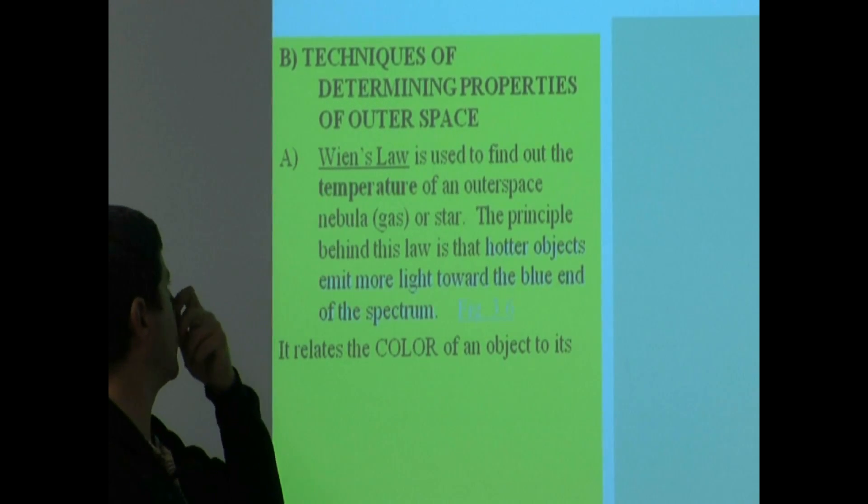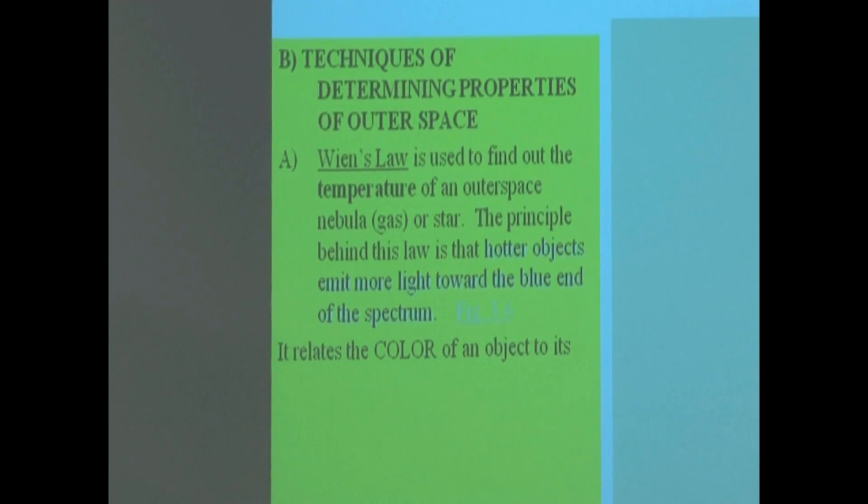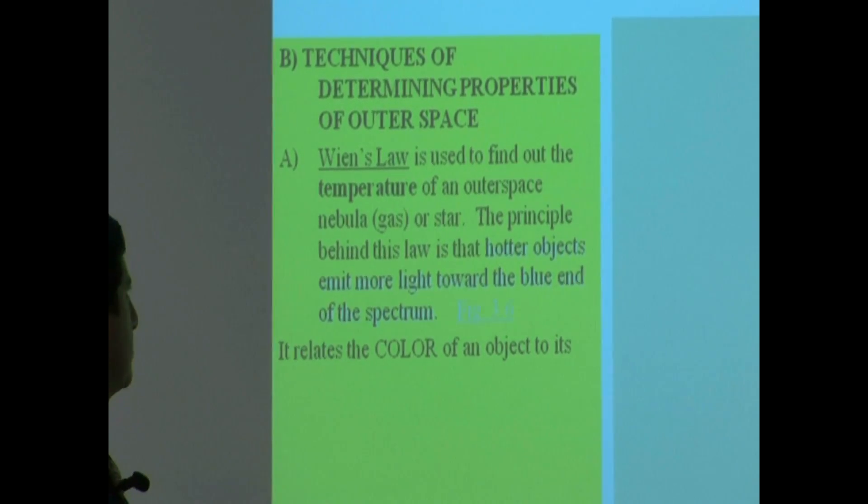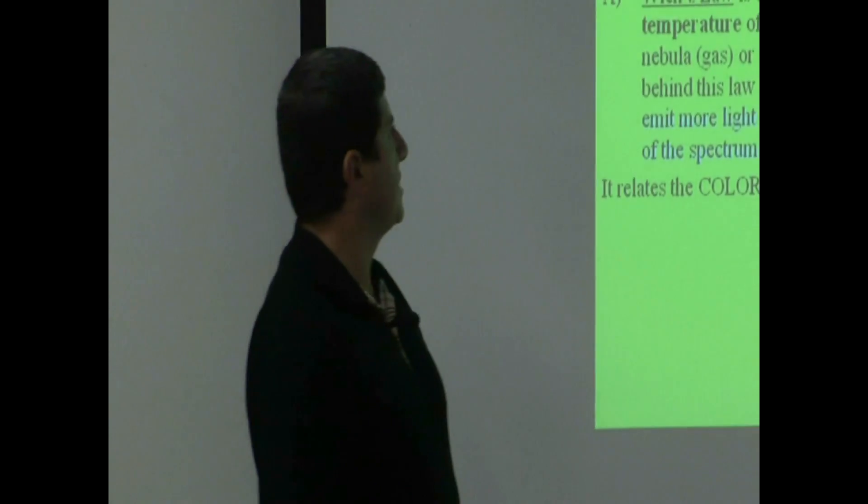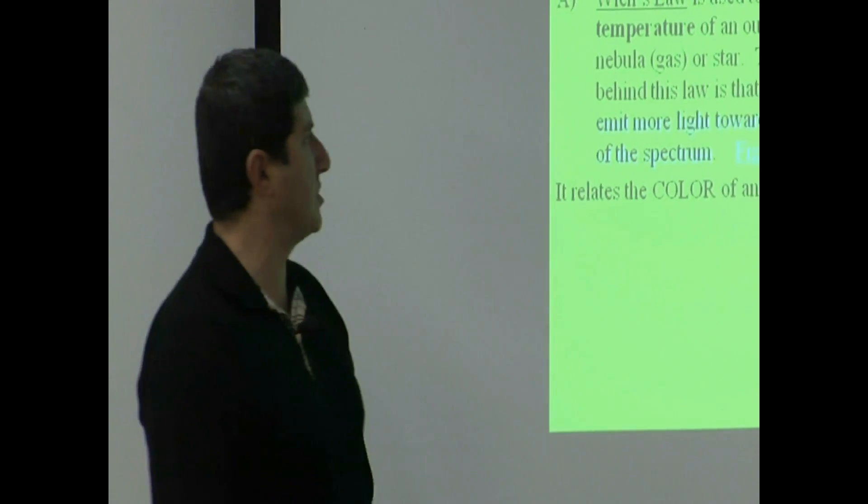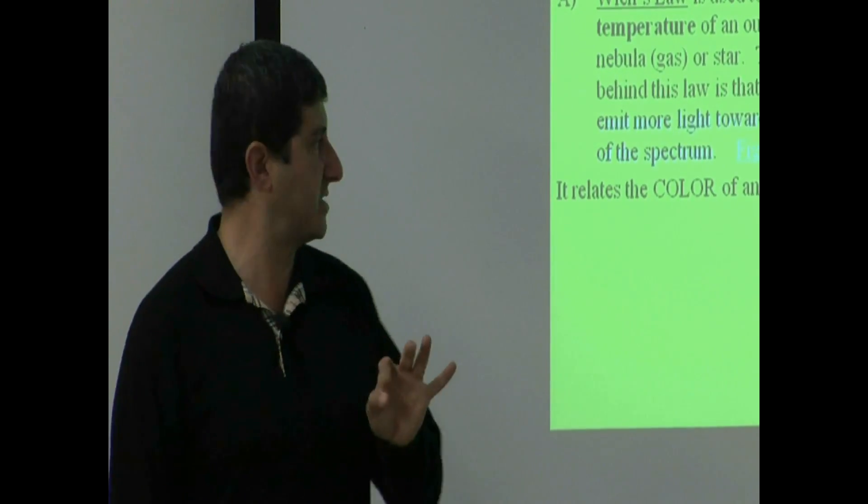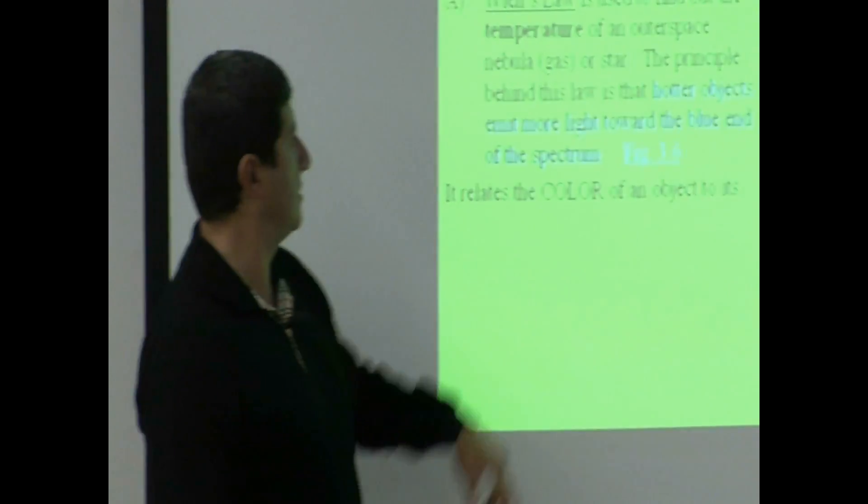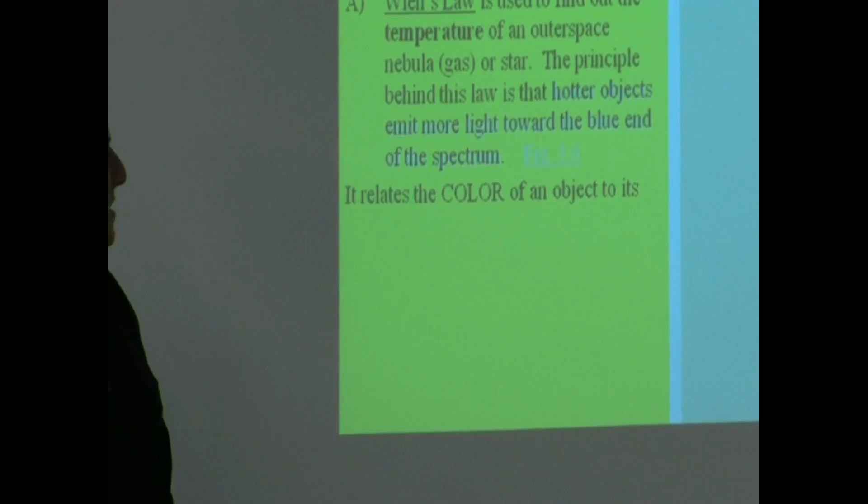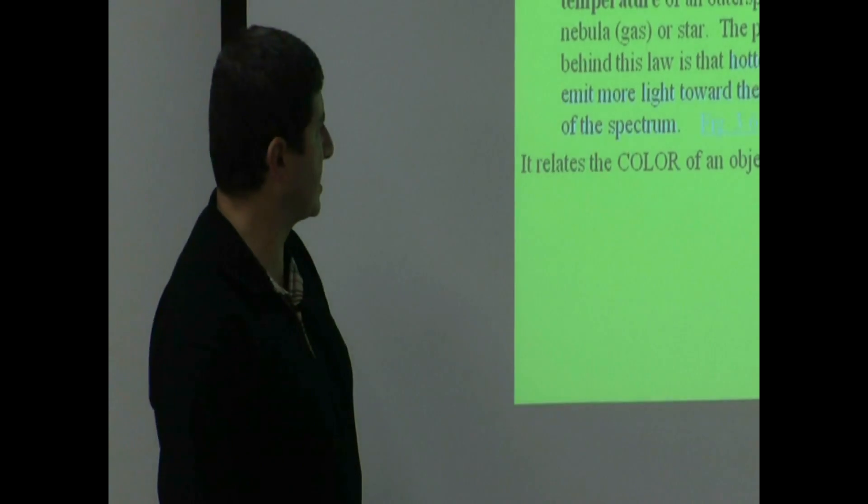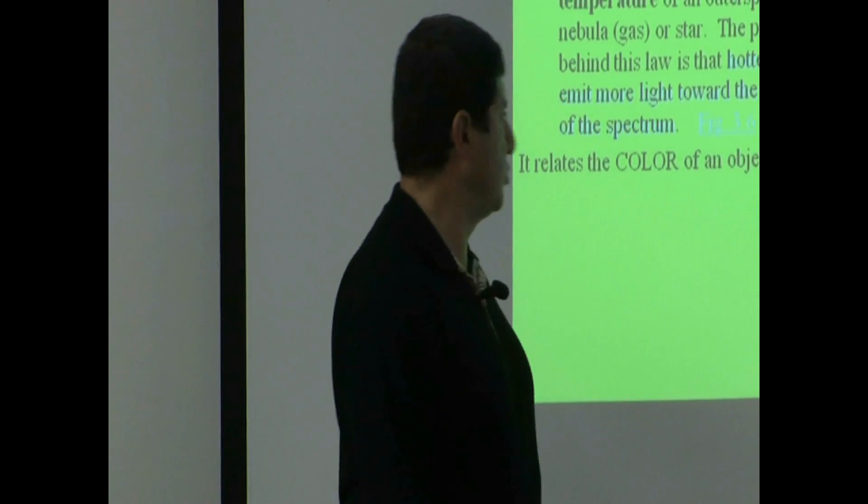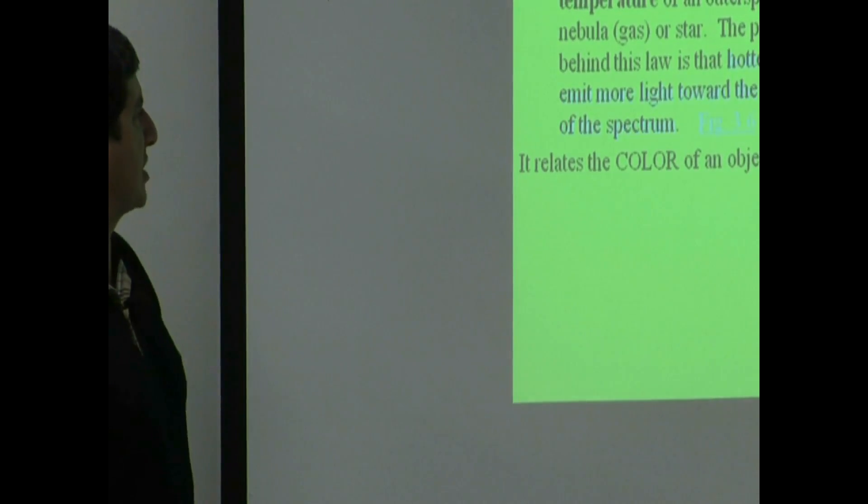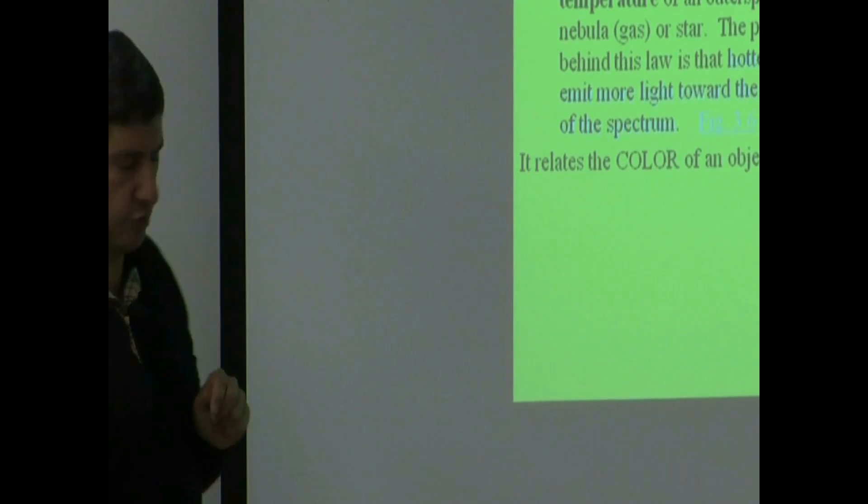It's a German physicist and you pronounce it V with a Wien, Wien's Law, even though it's written as W. Wien's Law is used to find out the temperature of an object in outer space, any object, whether it be a gas or a star. However, the principle behind this law is that hotter objects emit more light towards the blue end of the spectrum.